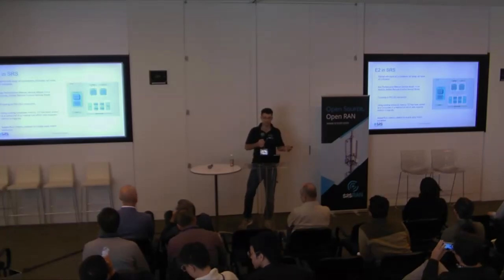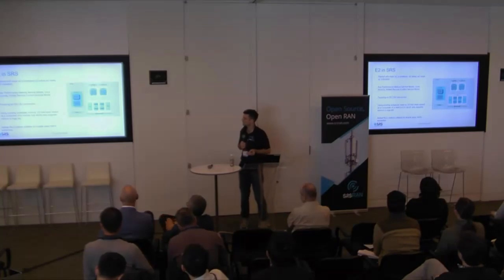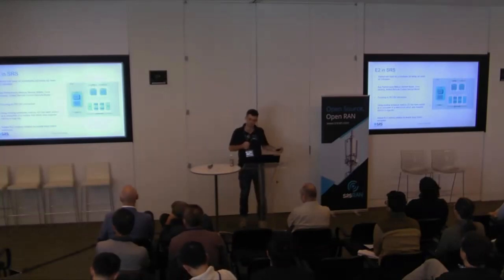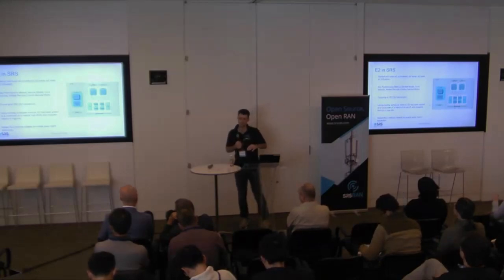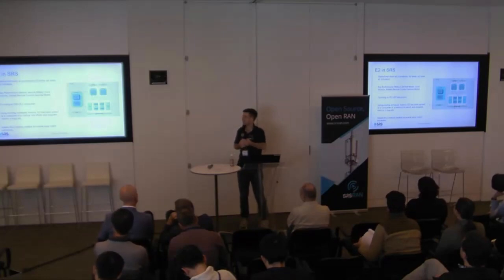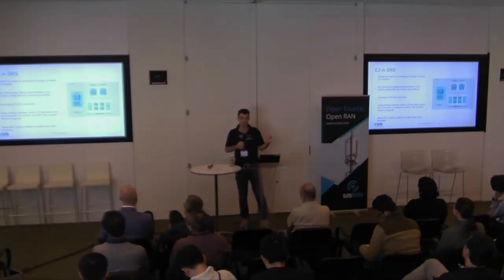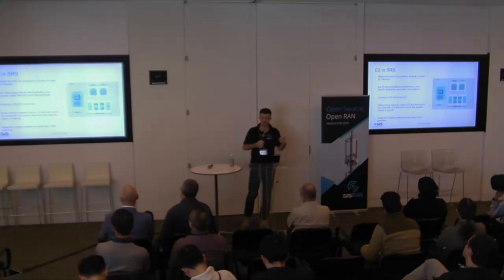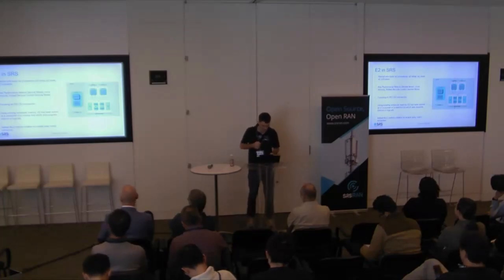Moving on to how this is implemented in our stack specifically: we started with the basic procedures — setup, reset, indication procedures — and then developed the two main service models, KPM and RC. KPM is more developed; RC is still in its infancy with just a couple of parameters, but the architecture is there. What we've done is taken existing scheduler metrics already being reported and created a metrics hub so that anything reported on screen is also sent to the E2 node. We've also added RLC metrics, monitoring all RLC SDU and PDU traffic drop rates.